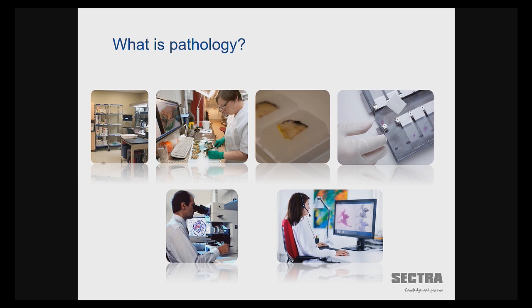Samples come into jars to the pathology department. The examination of the case starts with a visual examination of the full tissue — you take photos, you look at and feel the tissue, and you start to describe it. The tissue will then go through a long lab process, and the tissue will end up in paraffin blocks — small, rock-hard paraffin blocks, which is what you see on the third image.